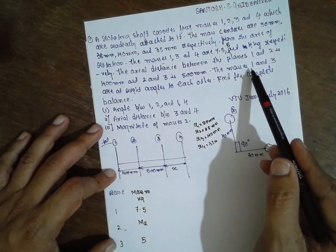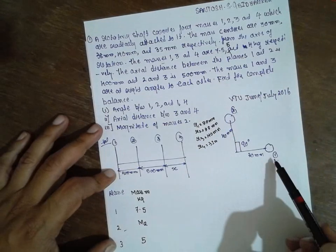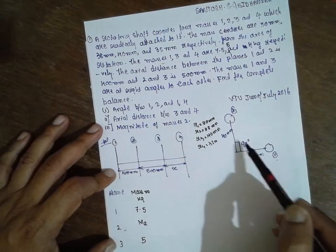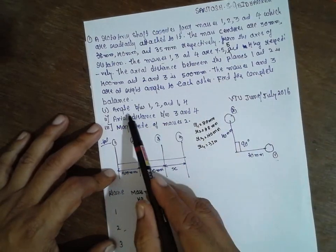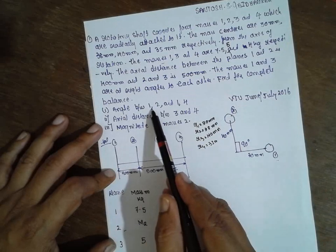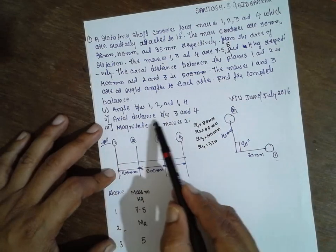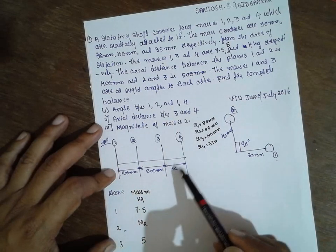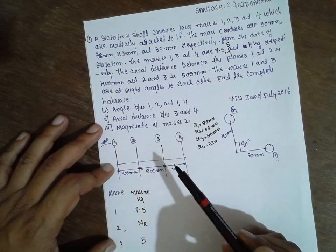Masses one and three are at right angles to each other. We have to find out the angle between one and four, the axial distance between three and four (X), and the magnitude of mass two.